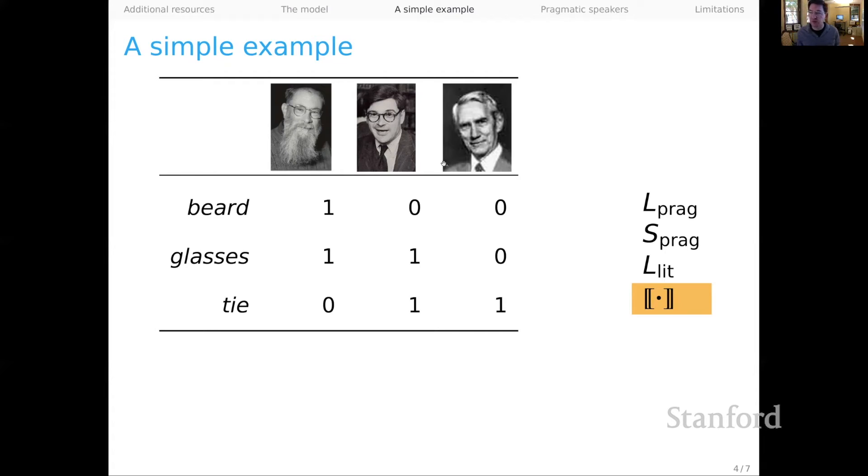And in this table here, we have the semantic grammar, the truth conditions of the language. So you can see that Lewis has this wonderful beard, but neither Grice nor Shannon have beards. Glasses is true of Lewis and Grice, and tie is true of Grice and Shannon. The literal listener, assuming we have flat priors, simply row normalizes those truth conditions. So we go from all these ones to an even distribution. And you can see that already beard is unambiguous for this listener, but glasses and tie present what looks like an insurmountable ambiguity. On hearing glasses, the literal listener just has to guess about whether the referent was Lewis or Grice. And same thing for tie.